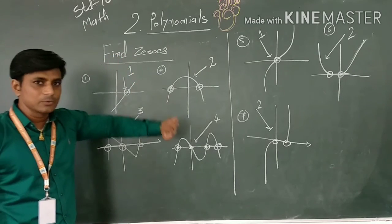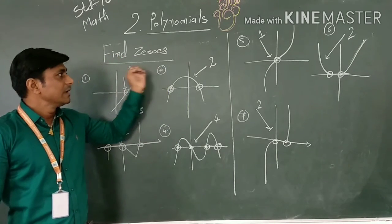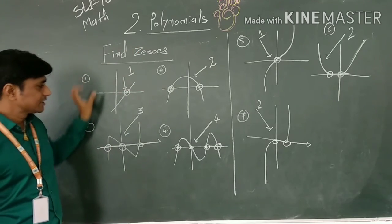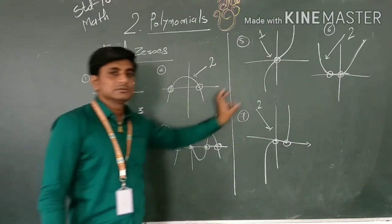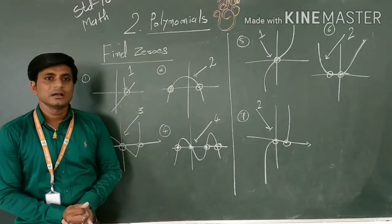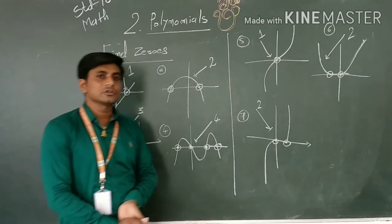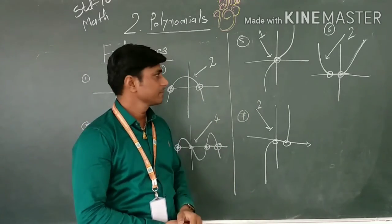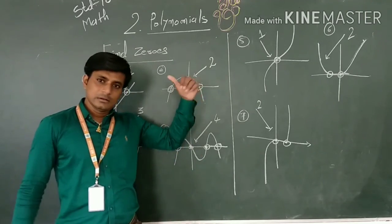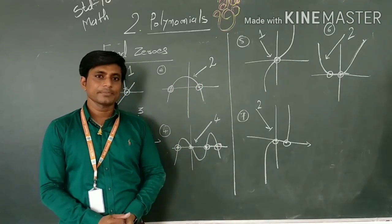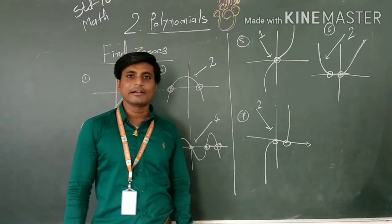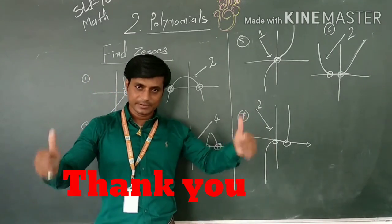In our textbook, Exercise 2.1 has a similar type of graph from which we find how many zeros a given graph has. I hope all students understood very clearly. Take care, have a nice day, and thank you very much.